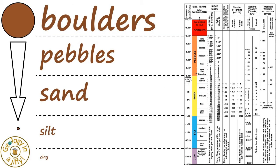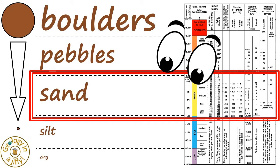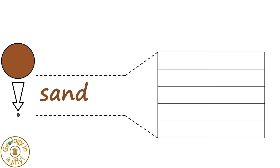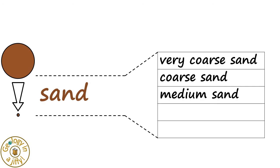In the Wentworth Scale, part of which studies sand size grains, where sand, ranging from larger to smaller, has five different grain sizes: very coarse sand, coarse sand, medium sand, fine sand, and very fine sand.